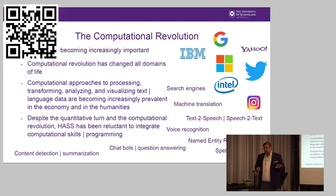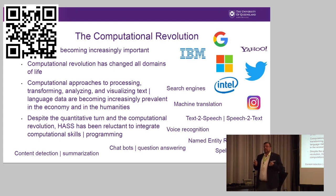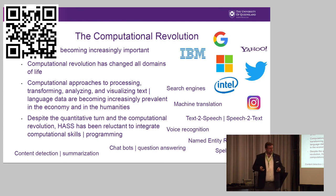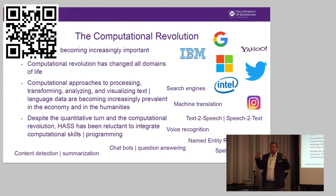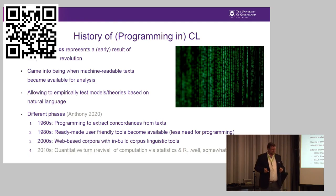I want to give an overview of computational methods and essentially where language data plays a role. In the biggest companies and the most important things we do on the internet, language data plays a critical role — if you think about Google and search engines, it's very apparent. That's essentially distributional semantics. It's something that we as corpus linguists understand and where we have laid the groundwork for a lot of these processes. But to a certain extent, we as corpus linguists have given that over to software engineers and people who do computing. So we're a little bit left behind.